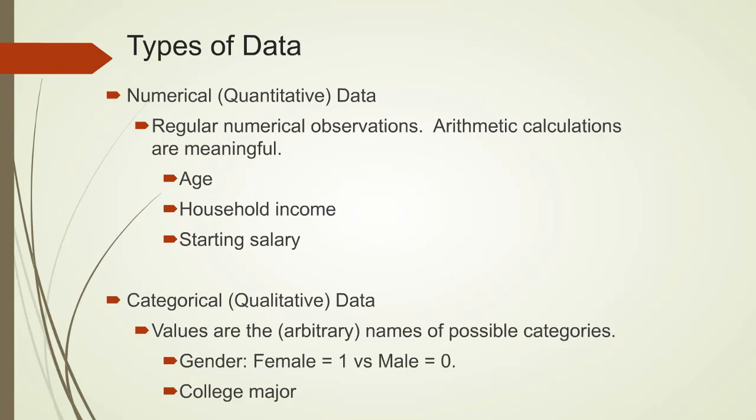When we think about data, we tend to divide data into numerical and categorical data. Numerical data, also known as quantitative data, is described by numbers. Think quantities like age, household income, starting salary, checking account balance.